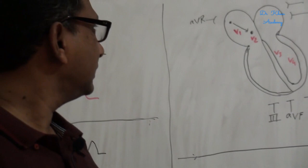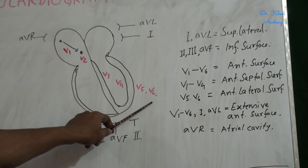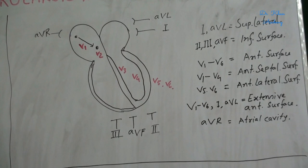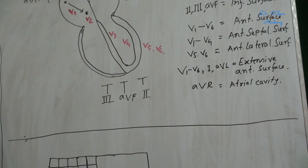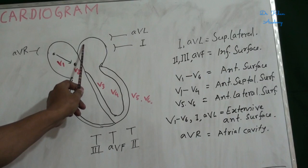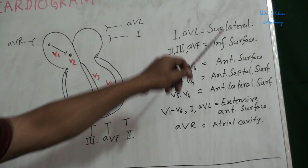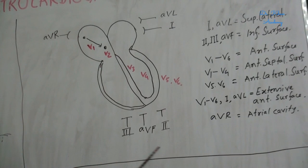There are 12 leads. Six leads are chest leads — these are the unipolar leads, V1 to V6. And another six leads are limb leads: lead AVL, lead 1, lead 2, lead 3, lead AVF and AVR. These are the bipolar leads. Leads 1 and AVL indicate the superior lateral surface, also called the high lateral surface.